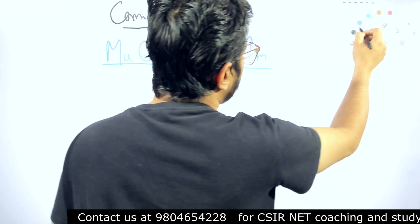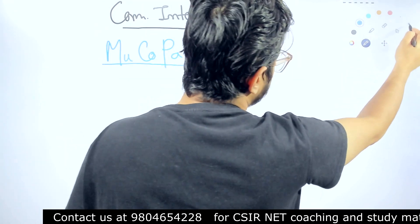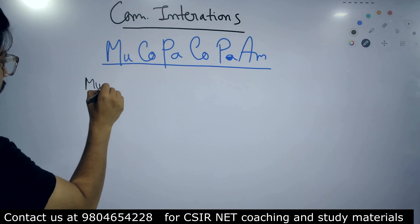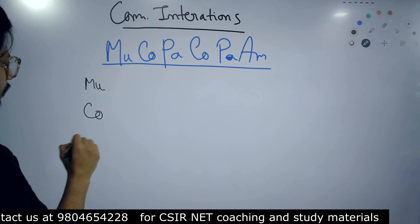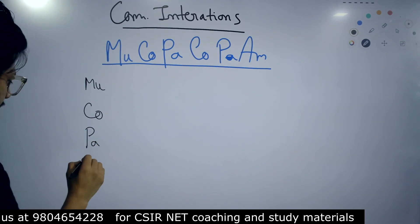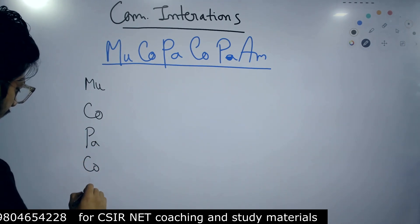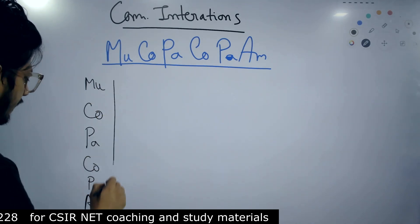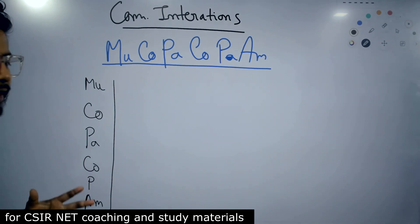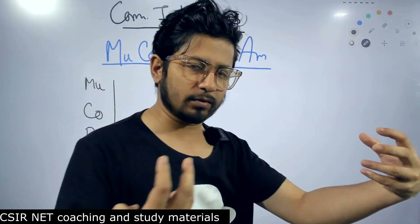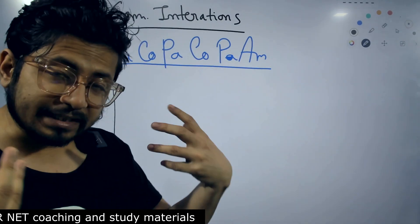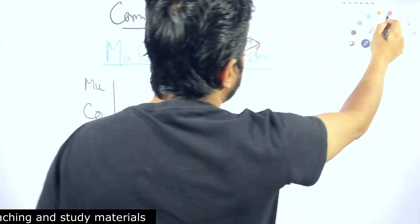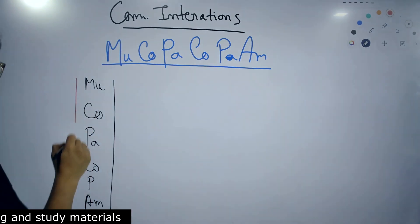Now, what I mean by Muko, Pako, Pam — let me write it here for you. We have MU to start with, then CO, then PA, then another CO, then a simple P, then AM. These letters make up the mnemonic.